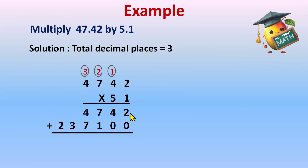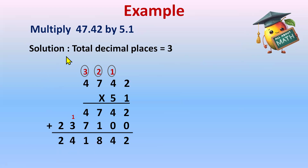Now we will do the addition. 2 plus 0 is 2. 4 plus 0 is 4. 7 plus 1 is 8. 7 plus 4 will be 11, carry 1. 3 plus 1 is 4, and 2 comes as it is. Now we have the answer. Now put the decimal places. Total number of decimal places are 3, so decimal will come after 3 digits. So it will come here, and your answer will be 241.842.